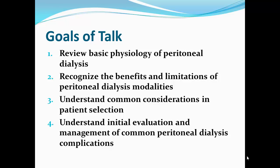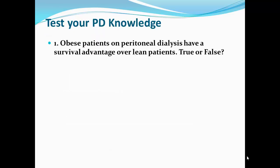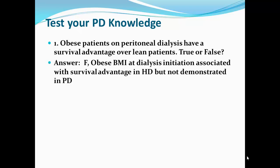So hopefully everybody has their coffee and we'll get started. A few important questions to test your knowledge. Obese patients on peritoneal dialysis have a survival advantage over lean patients on peritoneal dialysis — true or false? There is a survival advantage for morbidly obese patients in hemodialysis, but the same has not been shown for peritoneal dialysis. On the other hand, lean patients have lower survival for both peritoneal and hemodialysis if they initiate the dialysis modality with a BMI less than 20.